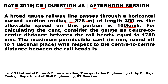For calculating the cant, consider the gauge as center-to-center distance between the rail heads equal to 1750 mm. The gauge distance is given as 1750 mm. The maximum permissible cant in mm, rounded off to one decimal place with respect to center-to-center distance between the rail heads, is asked.